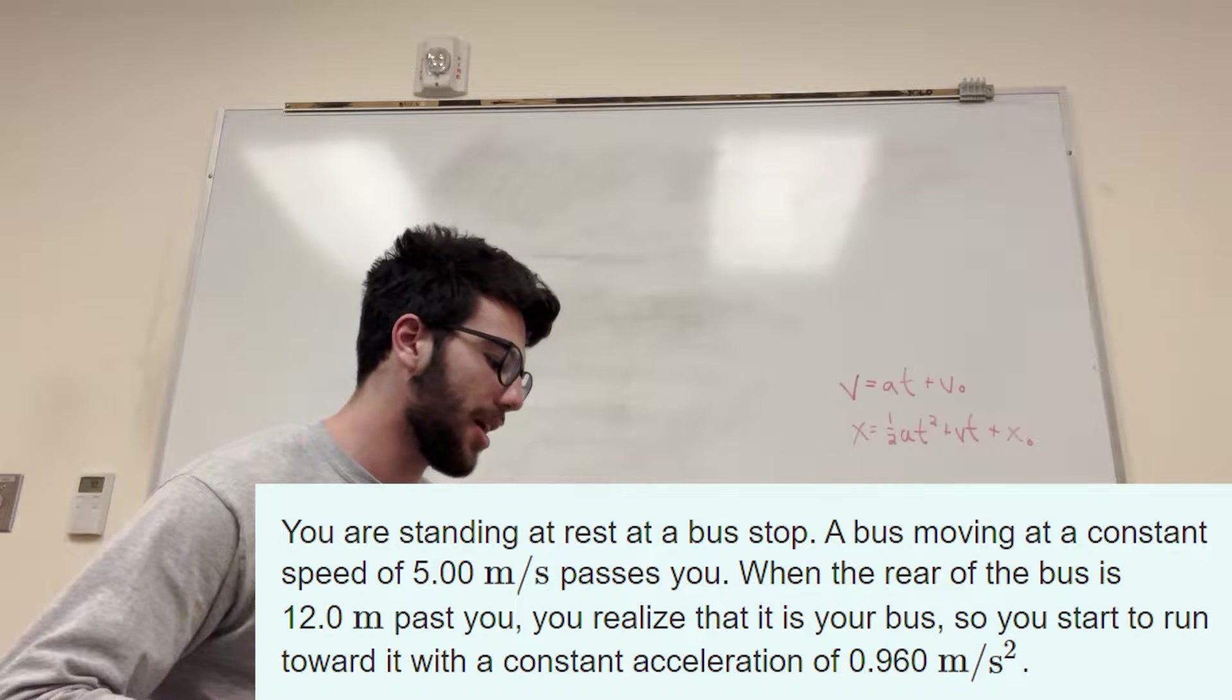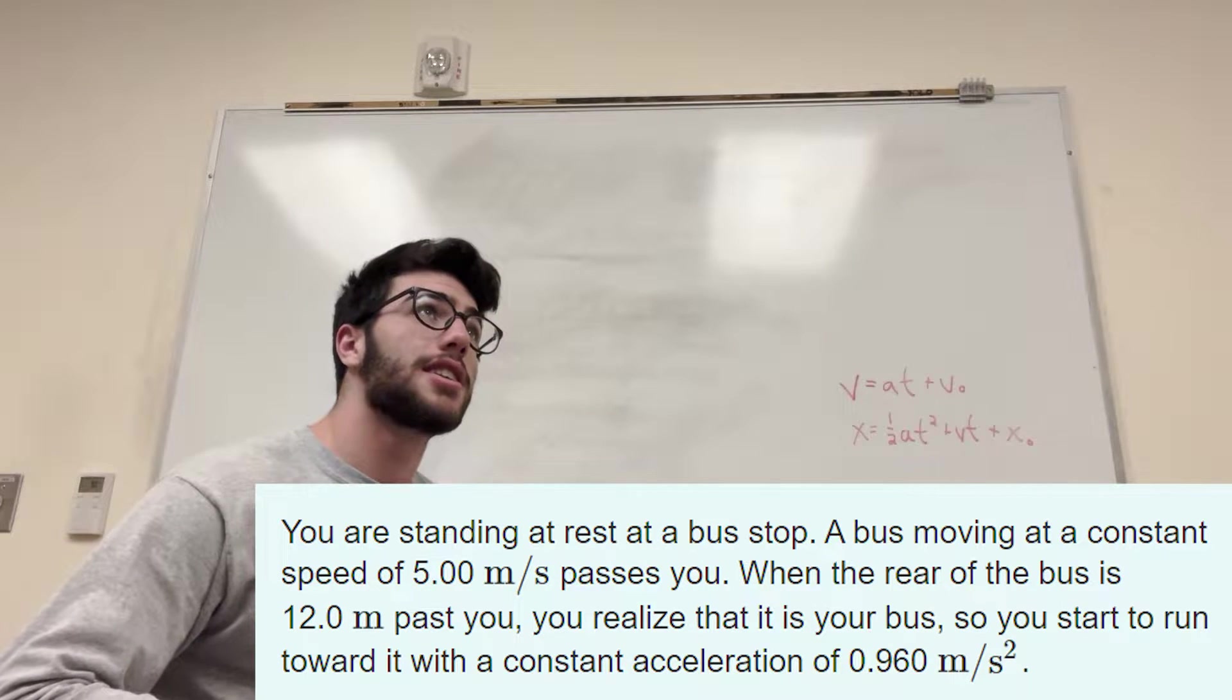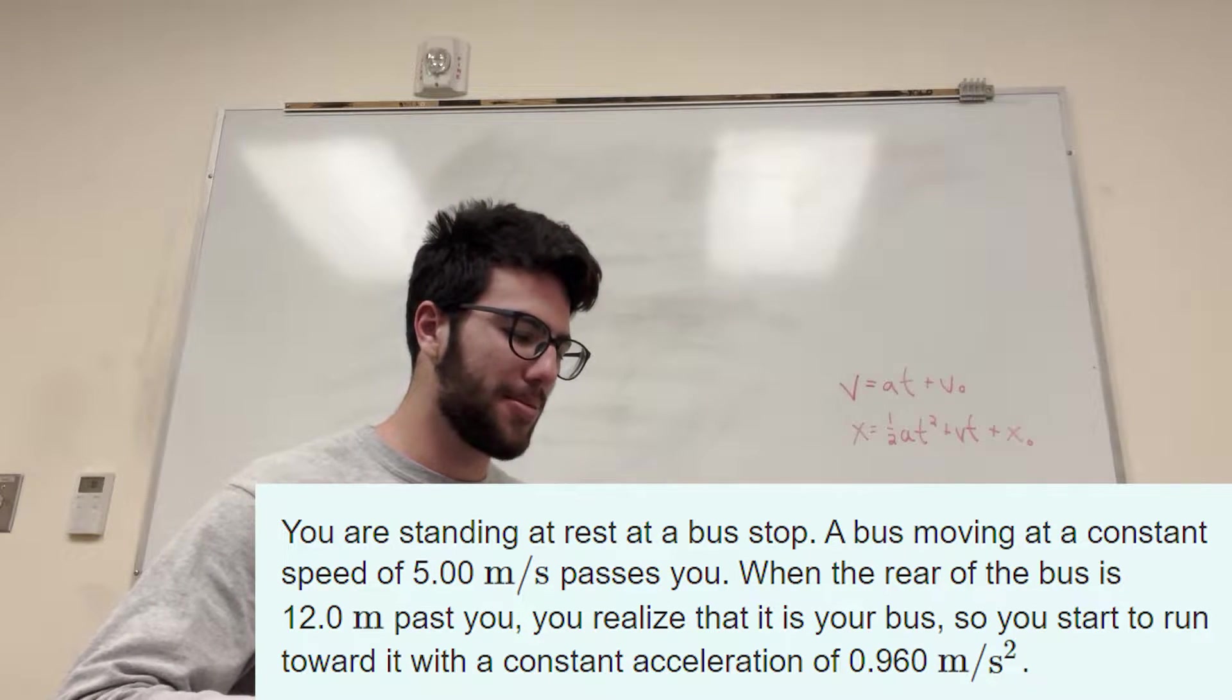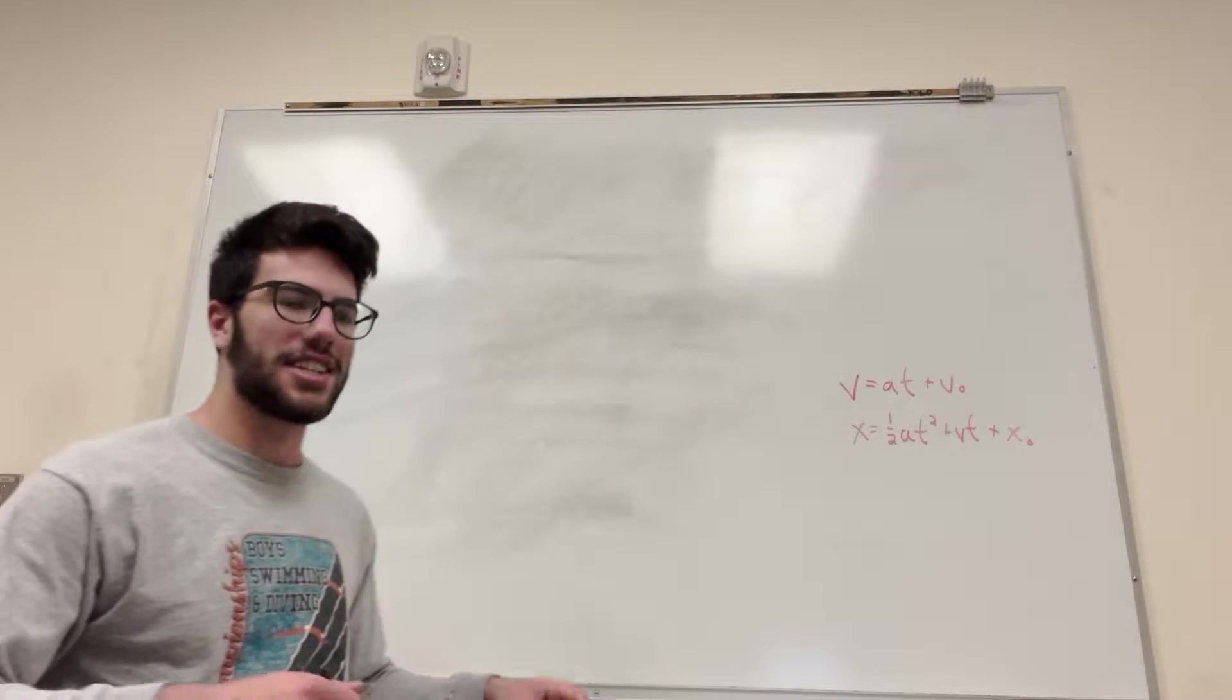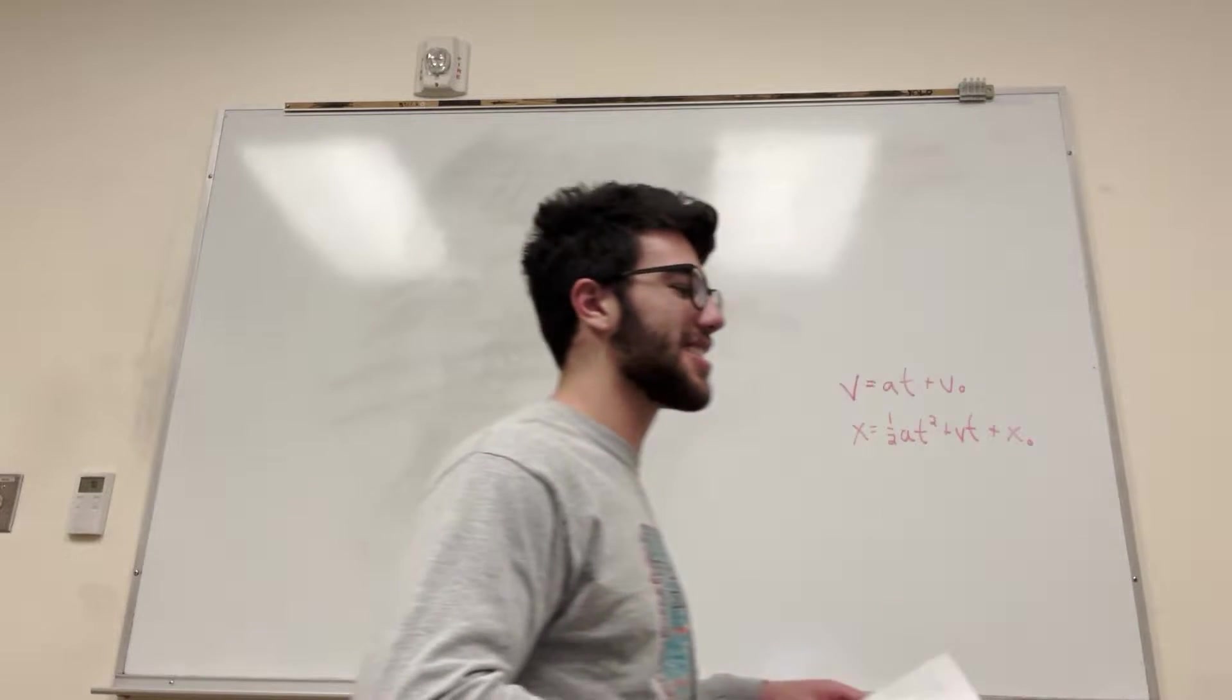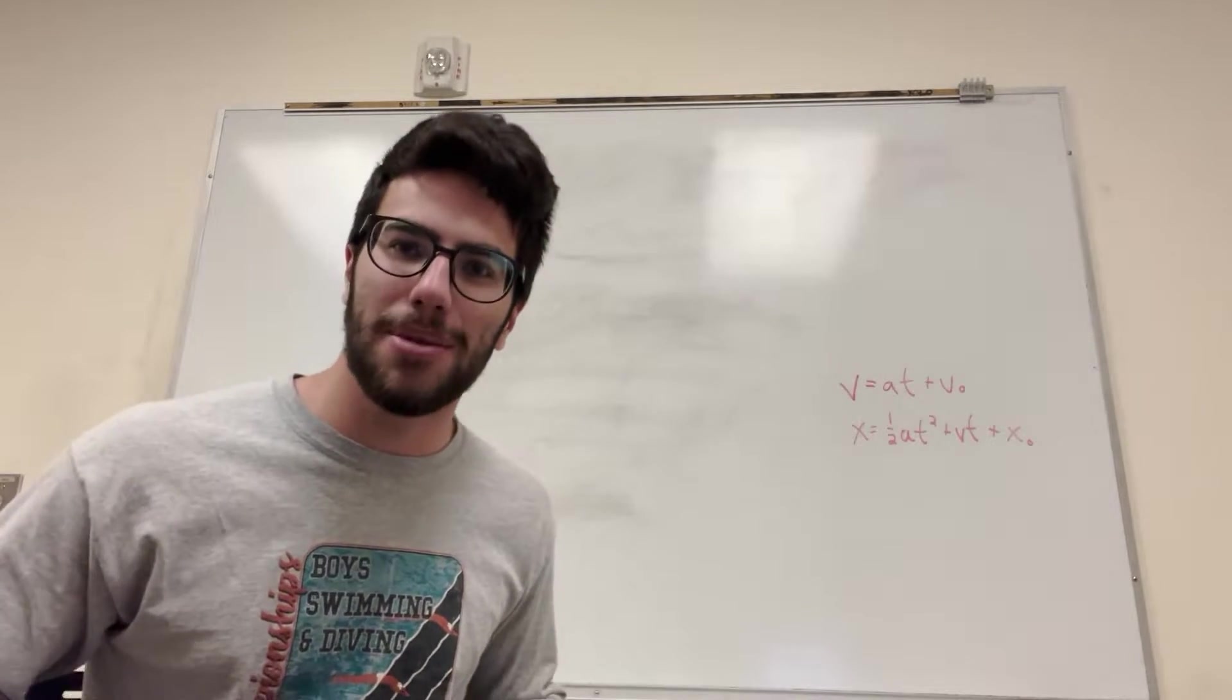So basically the bus is 12 meters ahead of you, driving at a constant velocity of 5 meters per second, which is pretty slow actually. You as a person are accelerating at a constant rate of 0.96 meters per second squared, which is also very unrealistic. Like who runs like that, starting really slow and then accelerating at a constant pace? This problem is flawed. I could catch up to the bus by just running fast at the beginning. But let's not talk about that, let's solve the problem.